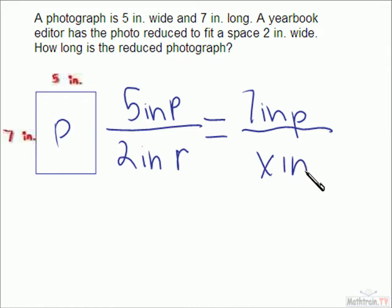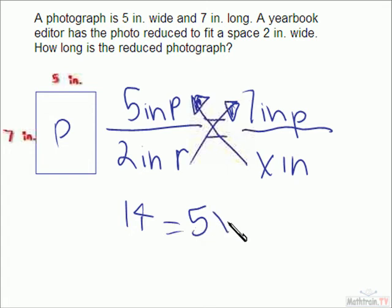The way we figure this out is by using cross multiplication. We're going to cross multiply that side and cross multiply that side. 2 times 7 is 14 and 5 times x is 5x.